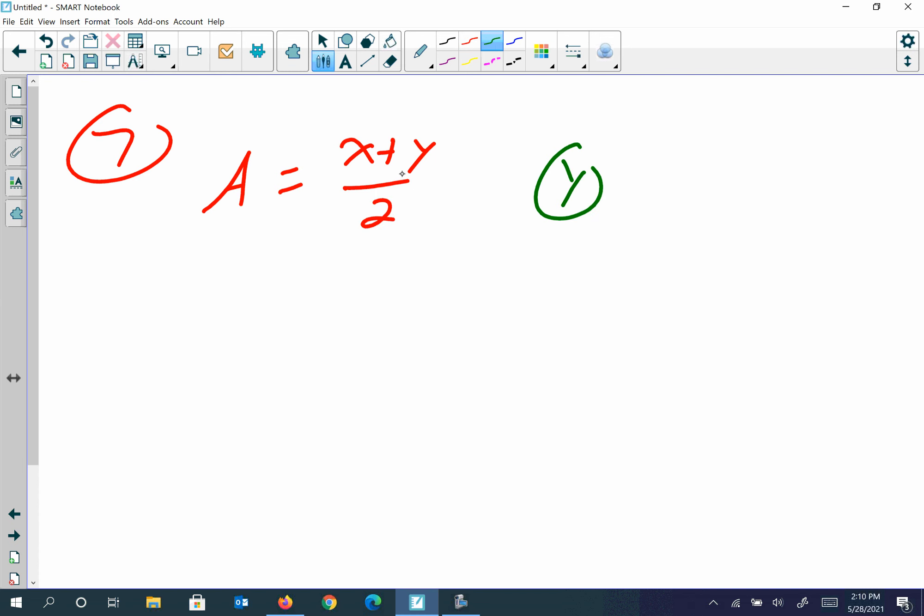All right, we want to get Y by itself. So what I'm going to do is multiply both sides by 2 first. I'm going to start reverse engineering it, breaking it down. And then X and Y are being added together, so I'm going to subtract X from both sides. Those cancel. So you get Y is equal to 2A minus X.